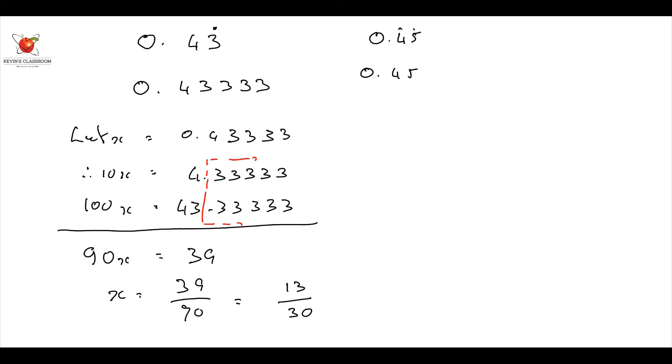0.454545 like that. Now, I'm going to multiply it this time by 100. So let me say, let x be equal to 0.454545. Therefore, 100x is going to be 45.454545.